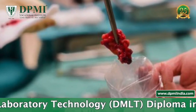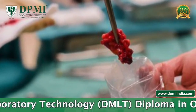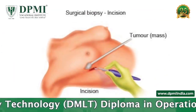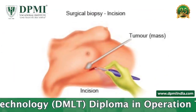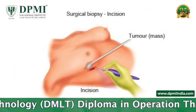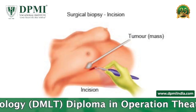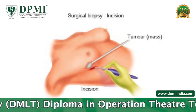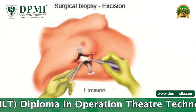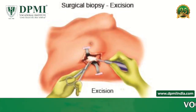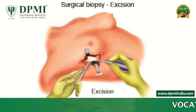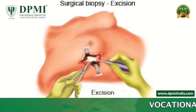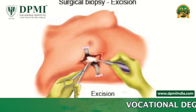Surgical biopsy may involve either open or laparoscopic surgery to obtain a biopsy of hard-to-reach tissue. There are two types: incision biopsy, where small portions of the lesion or mass are collected, and excision biopsy, where the biopsy is taken by entirely removing the lesion.